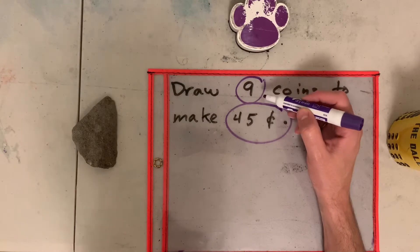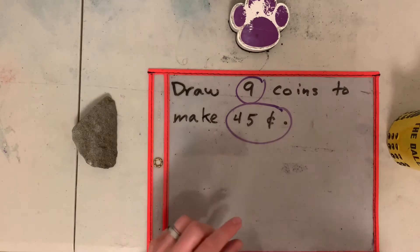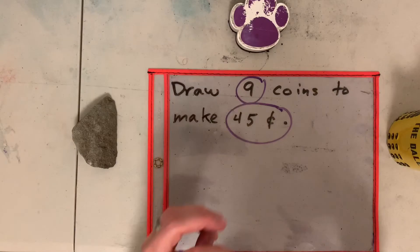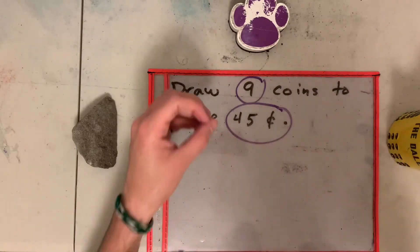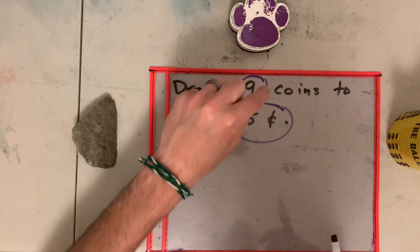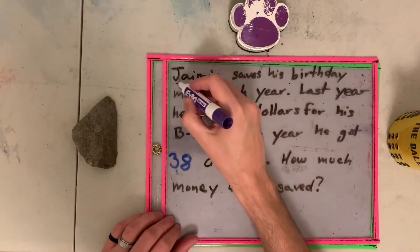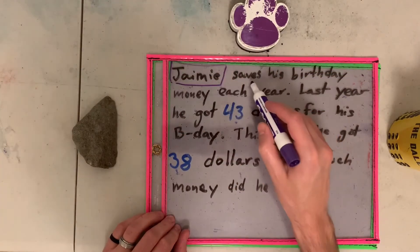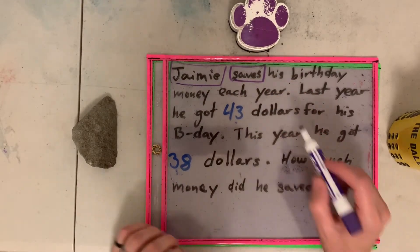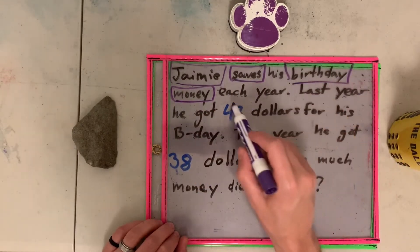Remember nine coins to make forty-five cents. Vas a dibujar nueve monedas y que esas nueve monedas hagan cuarenta y cinco centavos. No pueden ser seis monedas. No pueden ser tres monedas. No pueden ser diez monedas. Tienes que dibujarme nueve monedas. Así que tienes que sumar y restar, quitar monedas, poner monedas para ver que te haga sentido. Tiene que ser nueve monedas solamente.